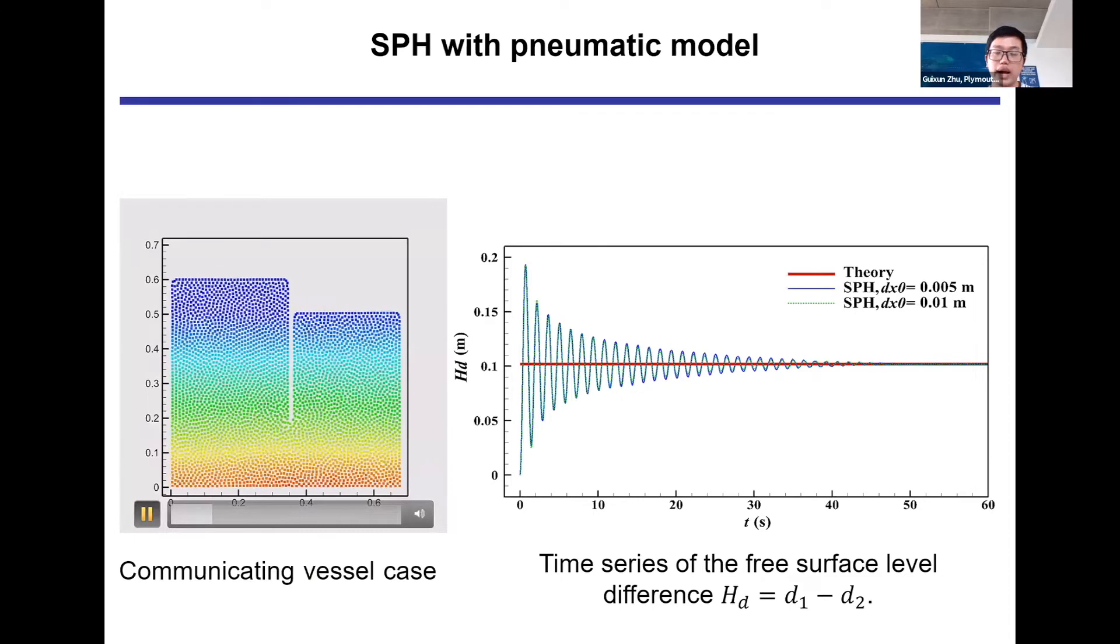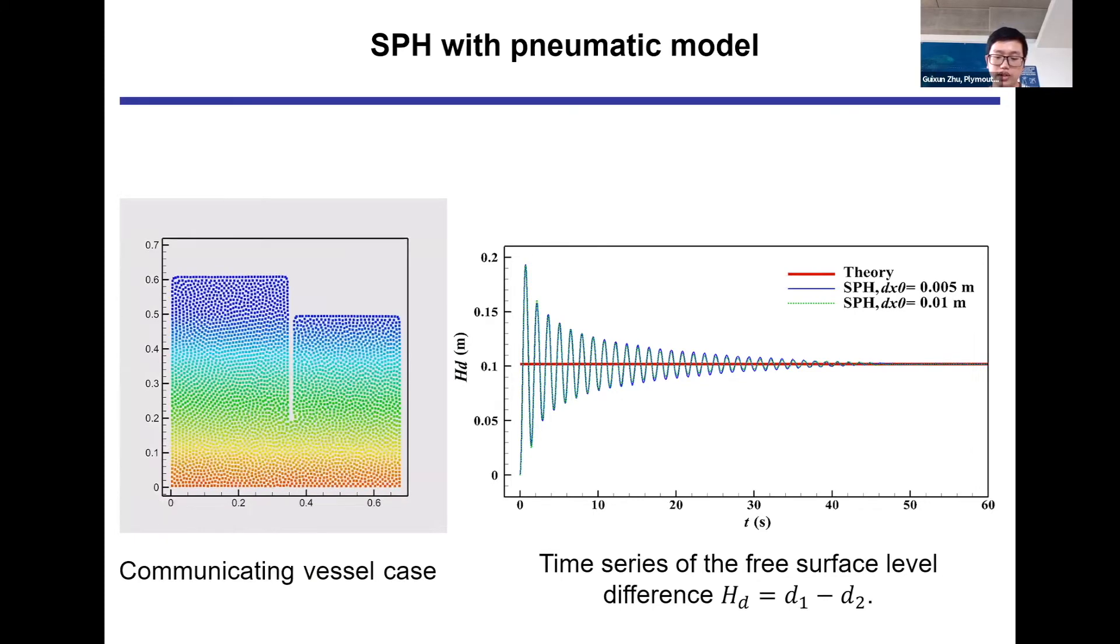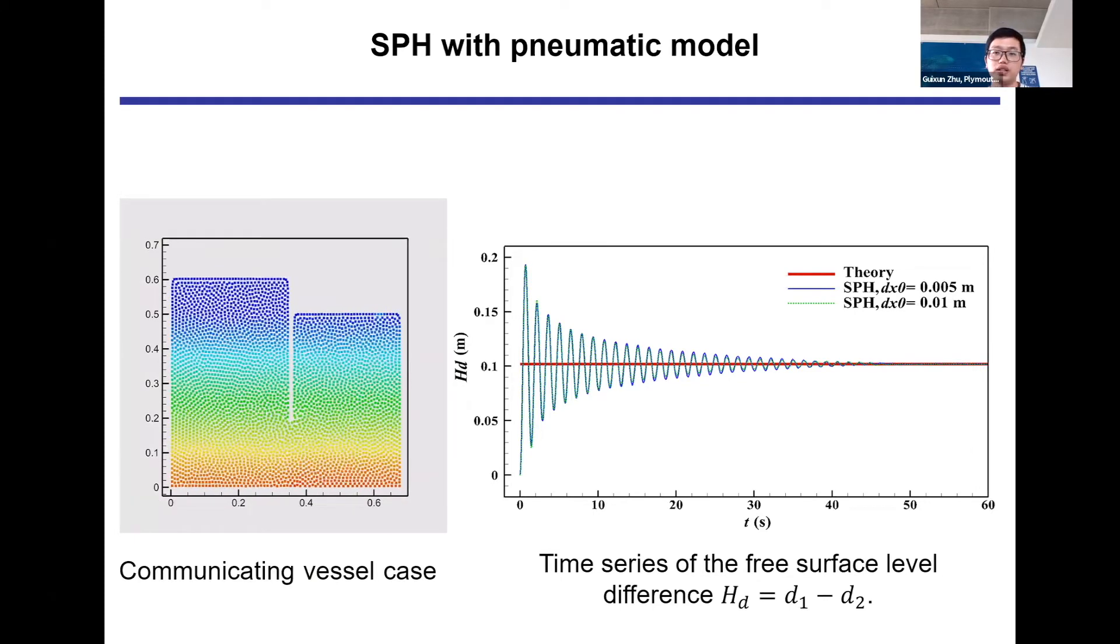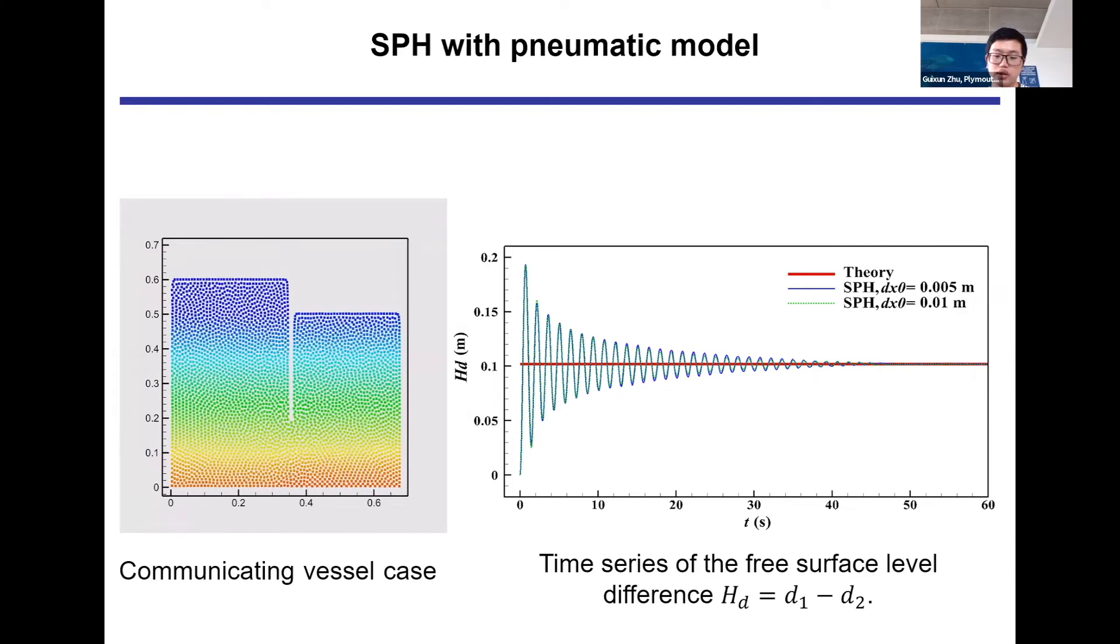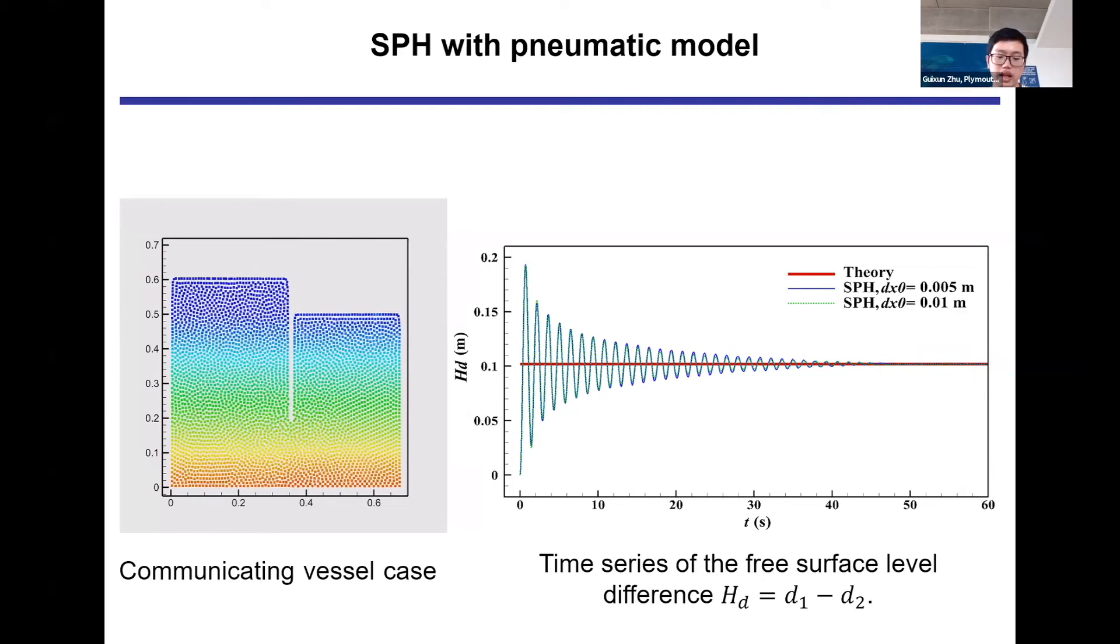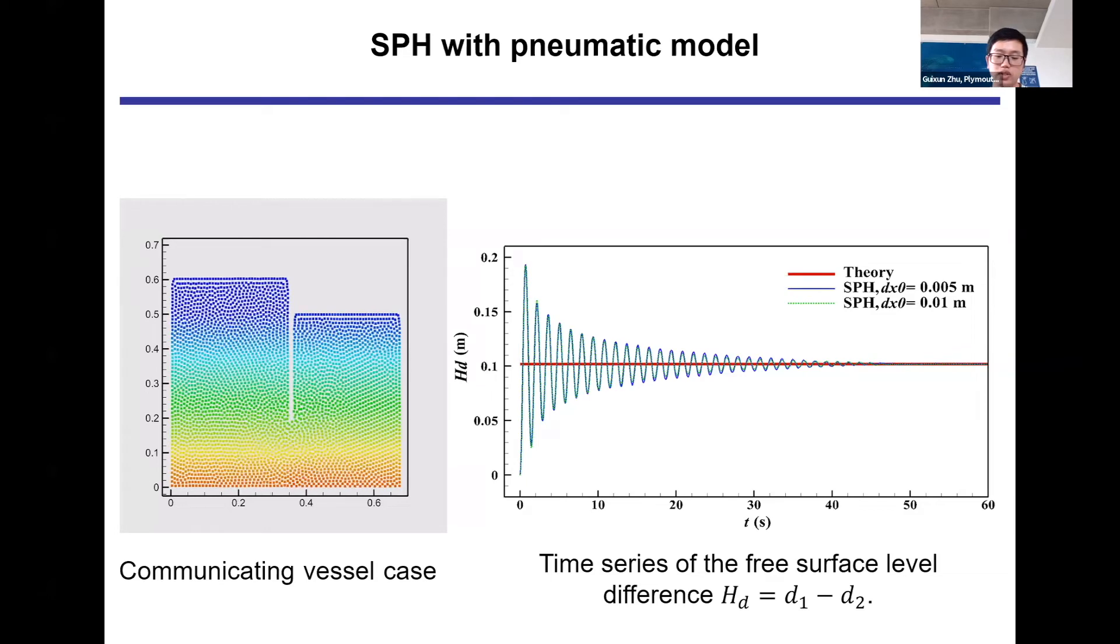The right-hand figure shows the time series of free surface differences between two containers. The free surface level differences oscillate with time, and the amplitude of oscillation decays as time progresses. Finally, the free surface reaches a steady value as we expect.